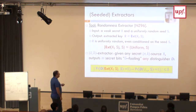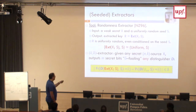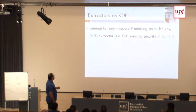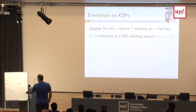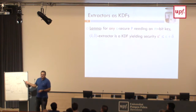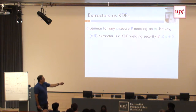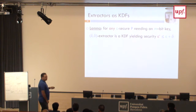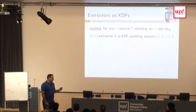The formal definition of extractor involves statistical distance. Essentially, it says no distinguisher can tell the extracted output apart from uniform with probability more than delta. There is a very simple lemma: if we can do extraction and the key is epsilon-close to uniform, then the final security is original security plus the error of the extractor — a simple triangle inequality. The statistical distance is a very strong notion. As we will see, the notion is too strong; we can actually do better.